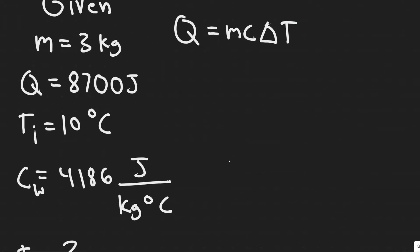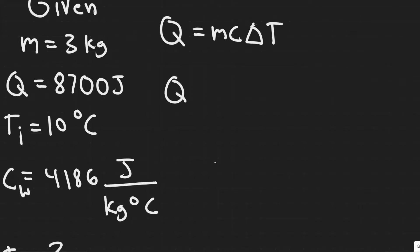And then delta T is basically the change in the temperature. So you can just rewrite this as M times C, and then write the change in temperature is just the same thing as the final temperature, T final, minus T initial.